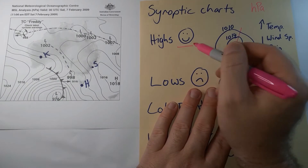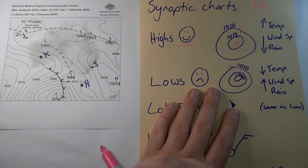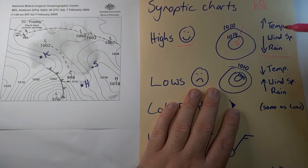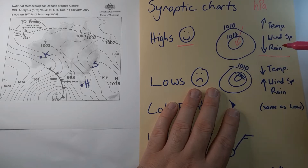I often call these 'happy highs,' because they bring happy weather: an increase in temperatures, a decrease in wind speeds, and a decreased chance of rain. So when we see a high, we're likely to get nice, warm, dry weather.